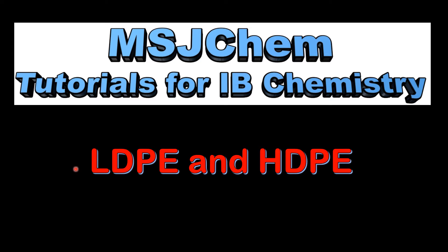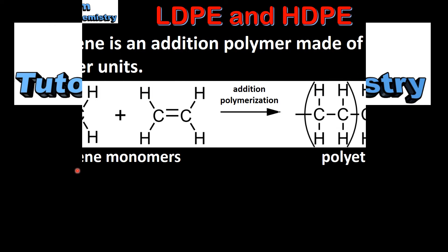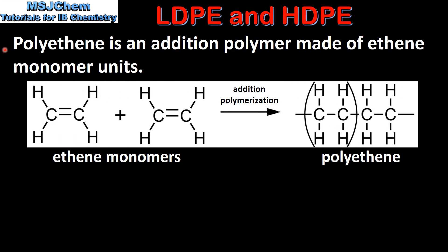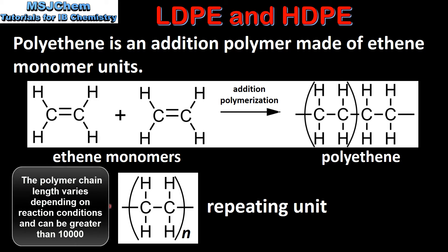This is MSJChem. In this video I will be looking at low density and high density polyethene. Polyethene is an addition polymer made of ethene monomer units. Here we can see ethene monomers combining in an addition polymerization reaction to form polyethene. Here we can see the repeating unit of polyethene, where N is a number greater than 500.